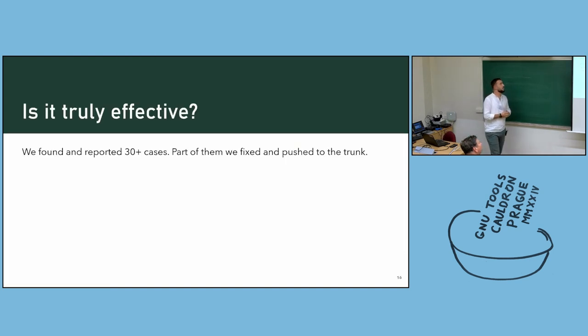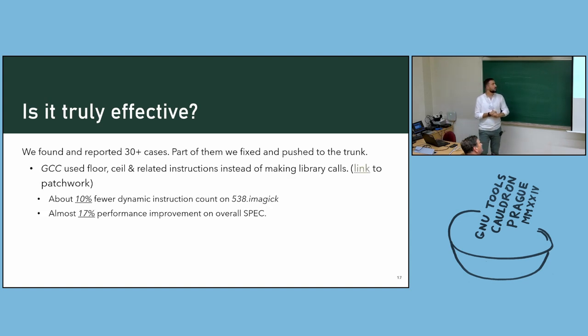And the last question. Is it truly effective? During our experience we found over 30 cases. Part of them we had fixed and pushed to the trunk. The last thing which I want to mention is GCC suffers on specs floating point instructions. I compared GCC and CLANG and figured out that GCC doesn't use floor sale and related instruction. Instead of that it just make library calls. After my fixing I got 10 percent fewer dynamic instruction on imaging and 17 percent improvement on overall spec. This patch already pushed on the trunk.